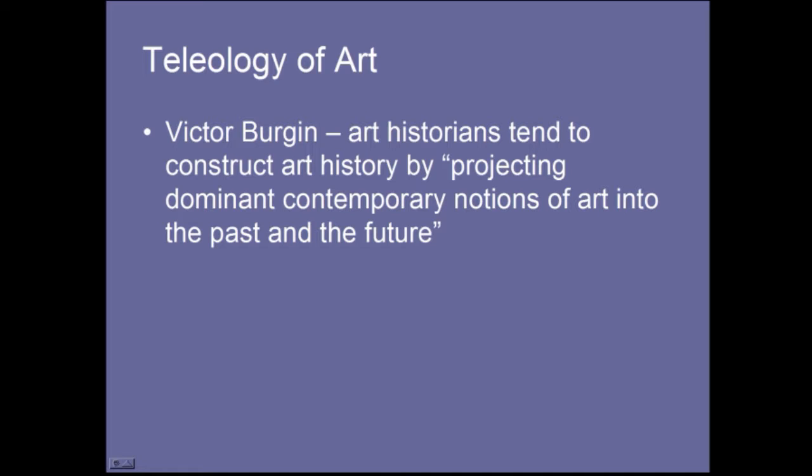Victor Bergen talks about how art histories construct art history by projecting dominant contemporary notions of art into the past and the future — using an aesthetic of the present to discuss past peoples and events. To project your view of history and the aspirations of peoples onto people who lived 200 years ago can be very dangerous and tentative. Teleology refers to stories that talk about how something was destined to be, and for that matter that it might even have been God's destiny that certain events or artistic trends would emerge.